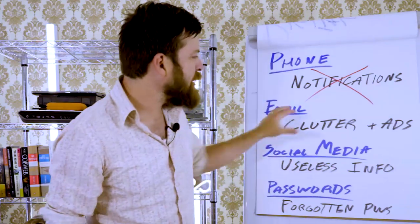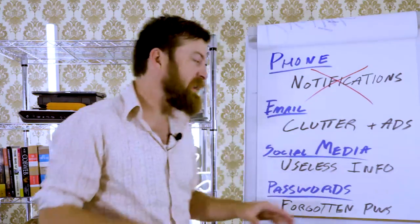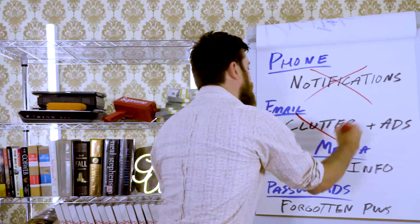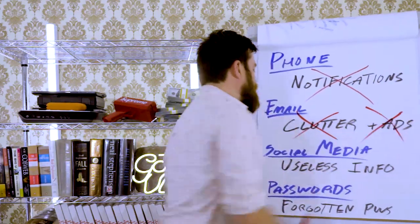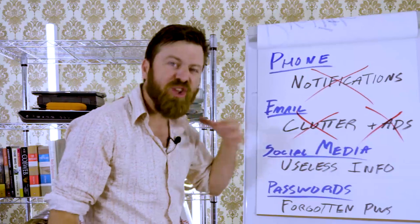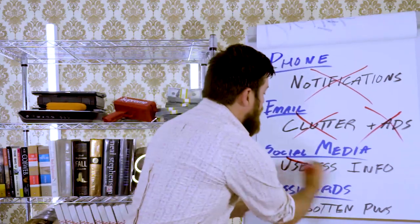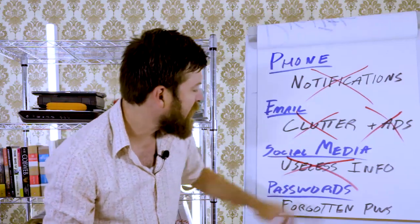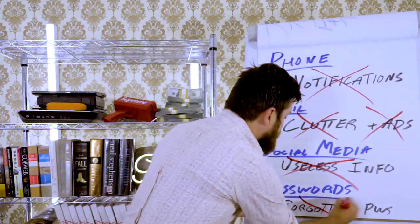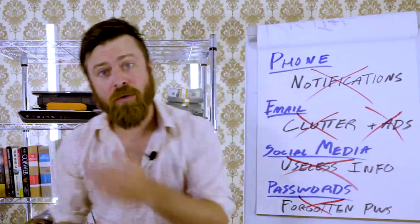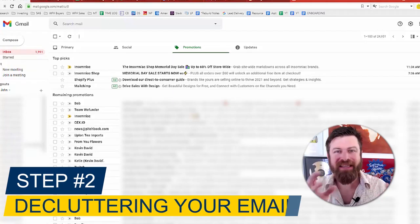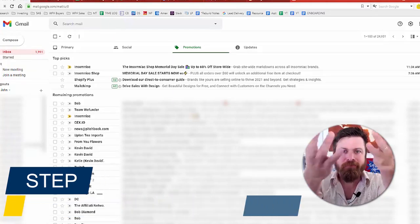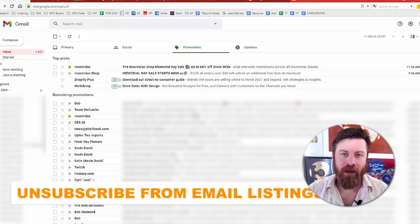The next steps I'm going to show on my computer. Inside your email, I'm going to show some advanced filters I use to get rid of clutter and advertisements. I'm also going to show how to get rid of useless information on social media, as well as how not to forget passwords. The first step I recommend to declutter your email is pretty simple — it's unsubscribing from a bunch.